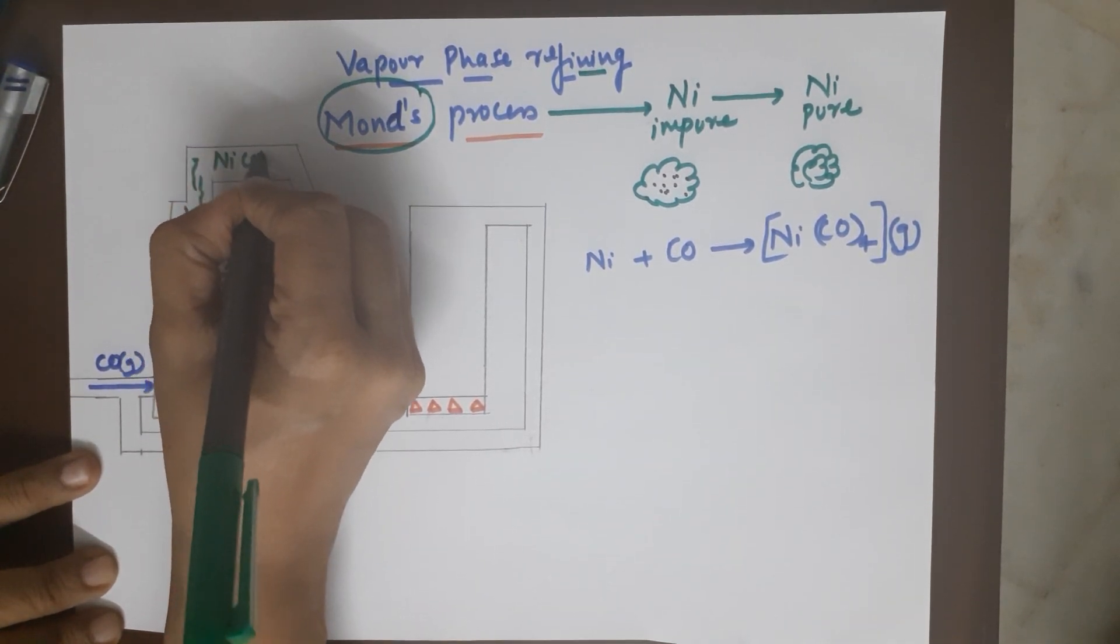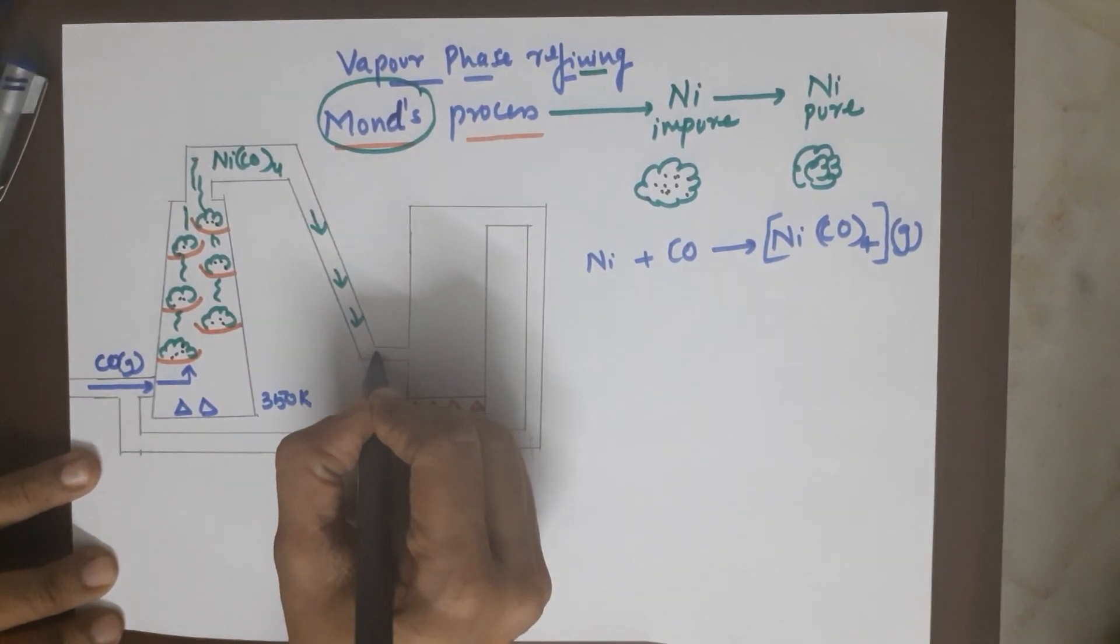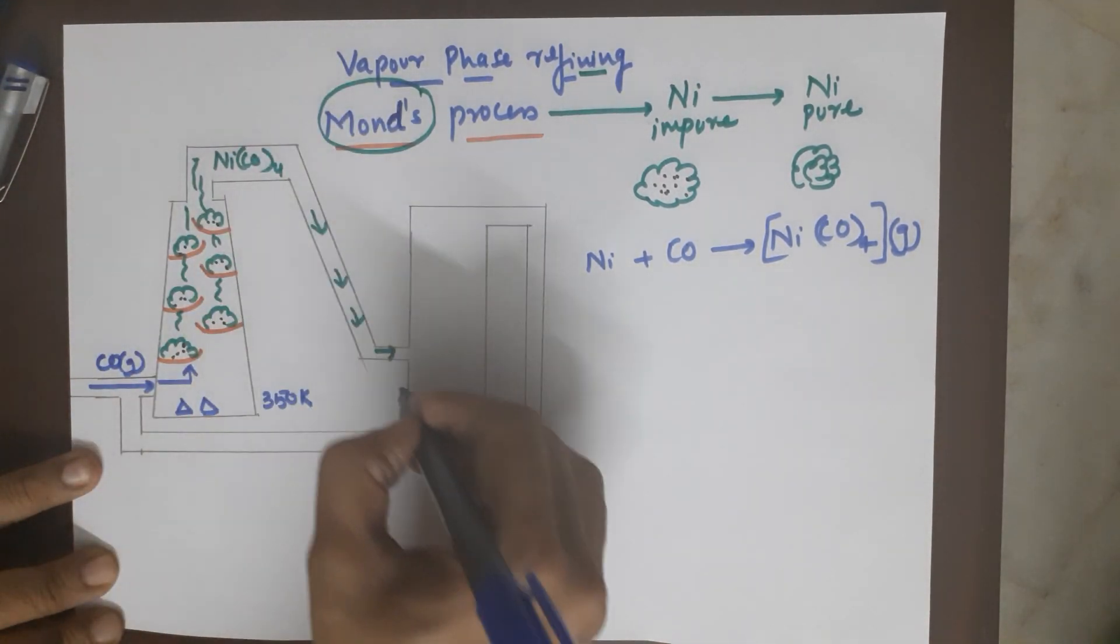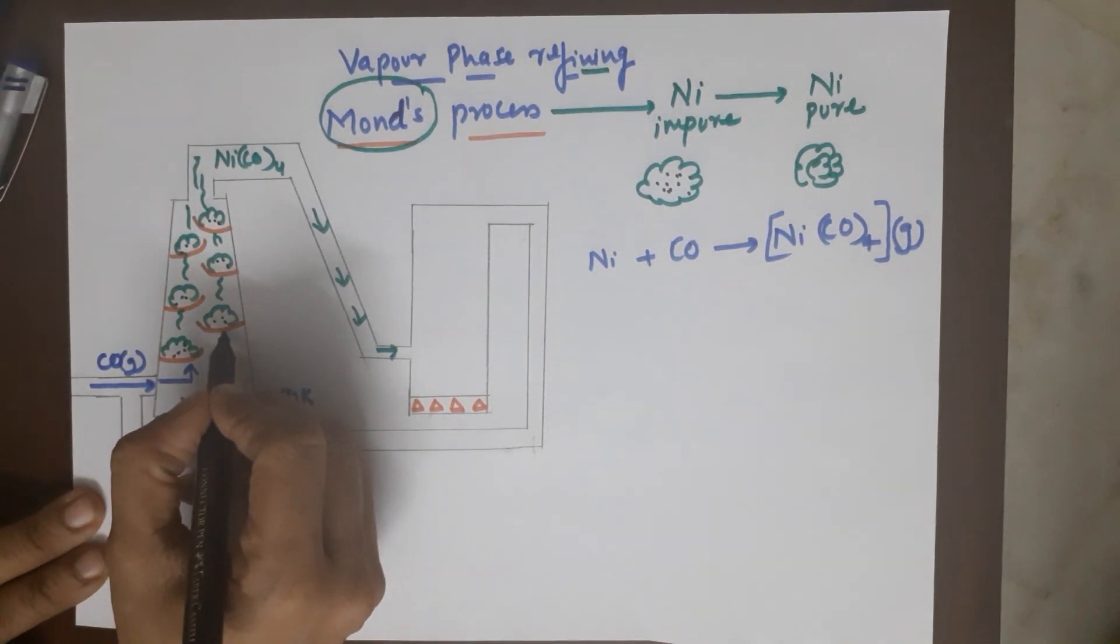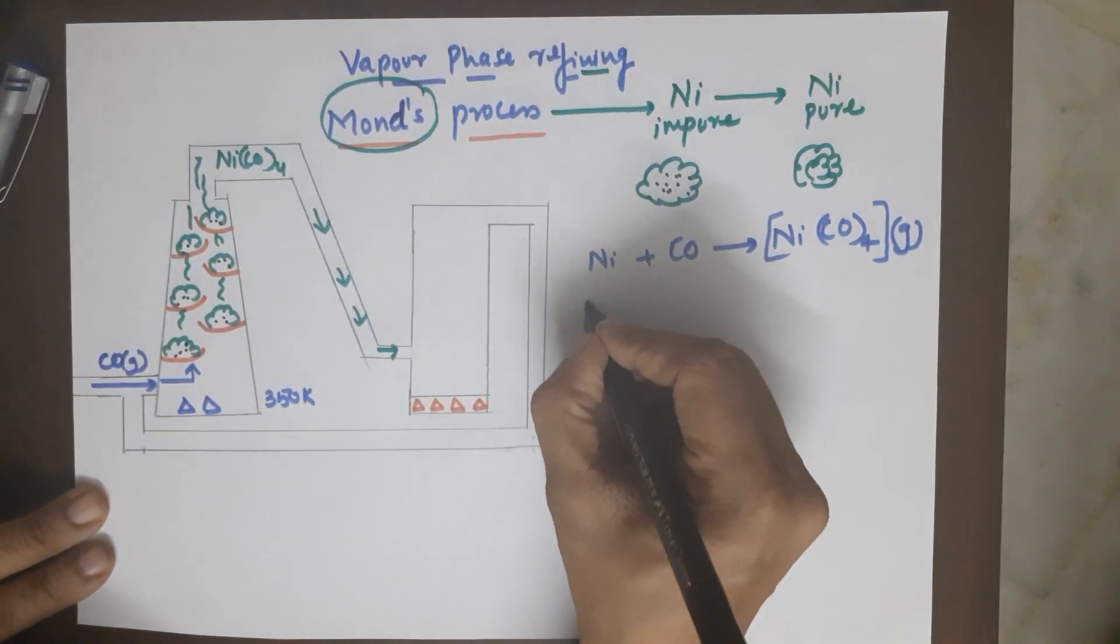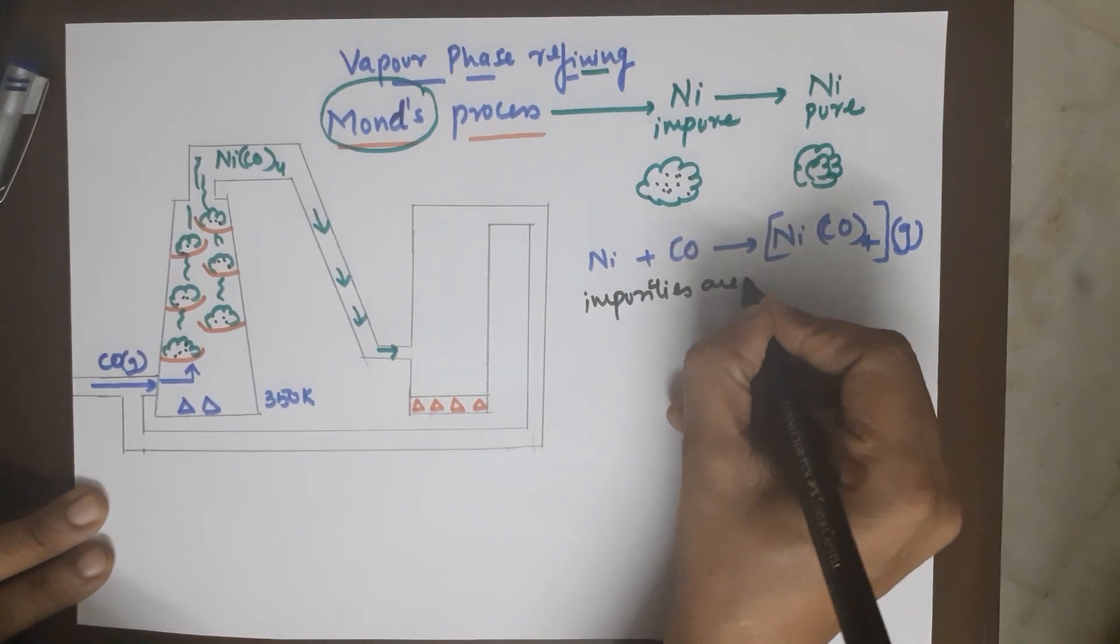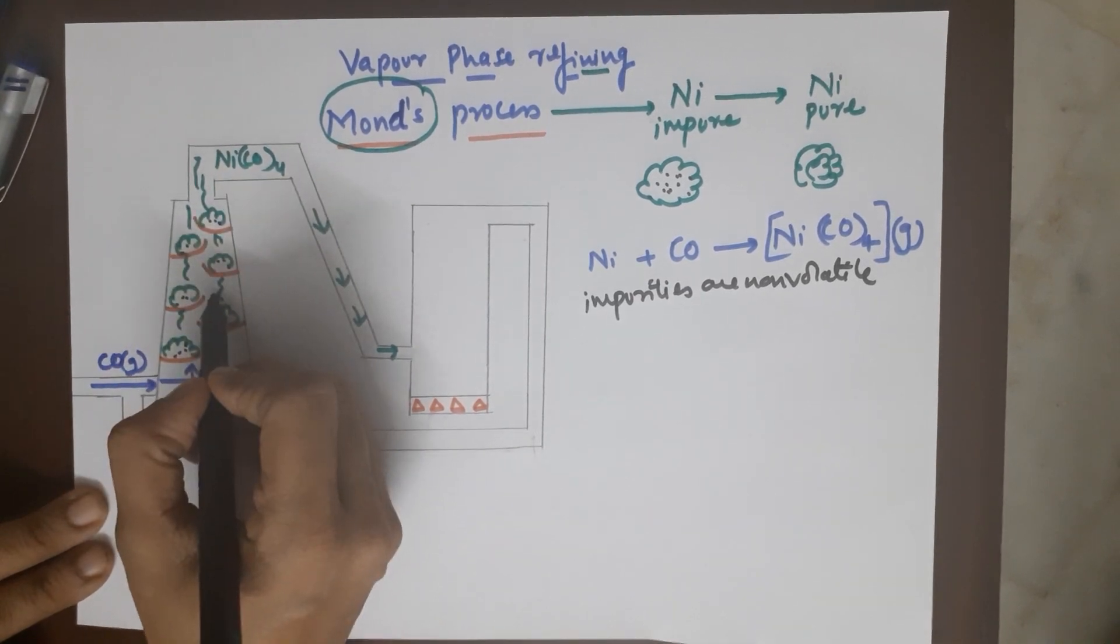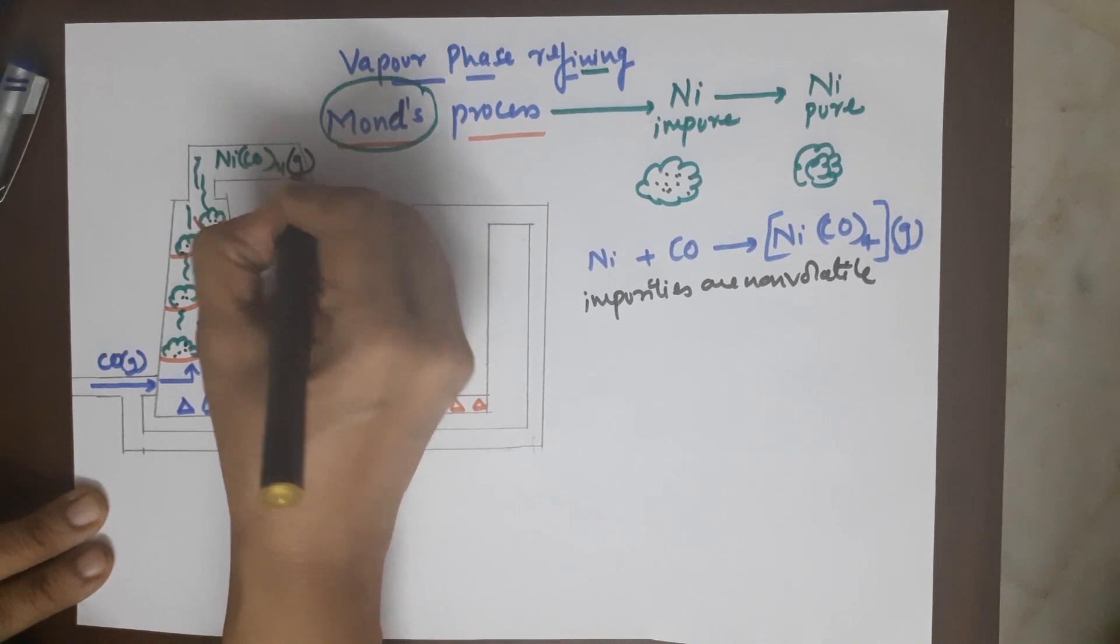So what you are getting out of this chamber is nickel tetracarbonyl. This nickel tetracarbonyl is then taken to another chamber. Mind you, the impurities are not traveling. Only the nickel tetracarbonyl compound is volatile. So the impurities stay back in these chambers, but the nickel forms nickel tetracarbonyl which is a gaseous compound.